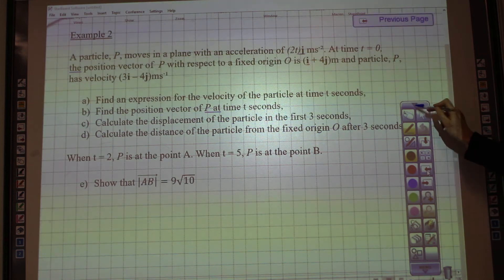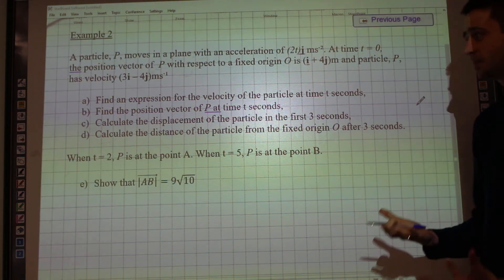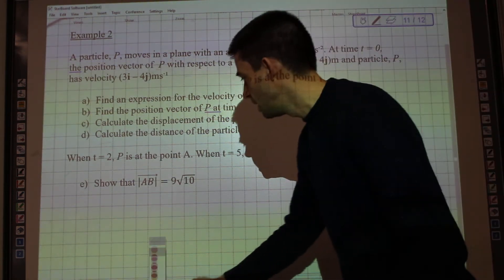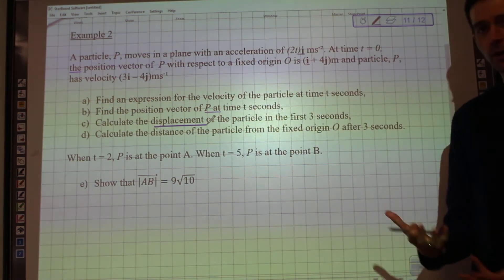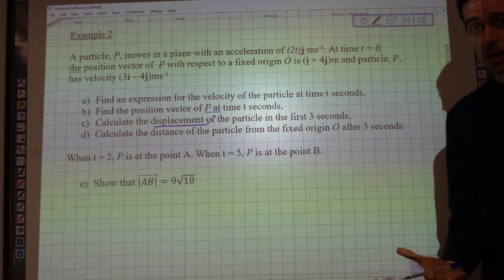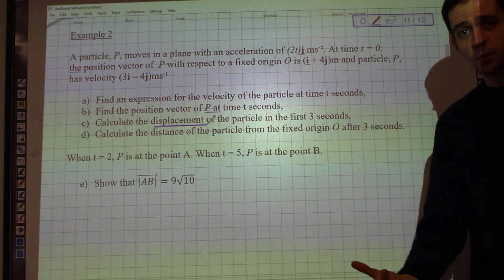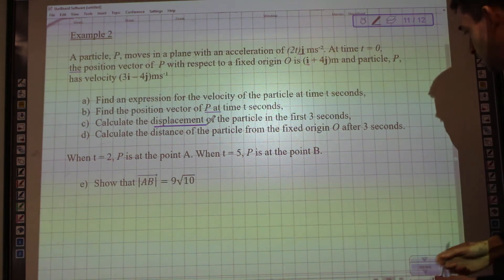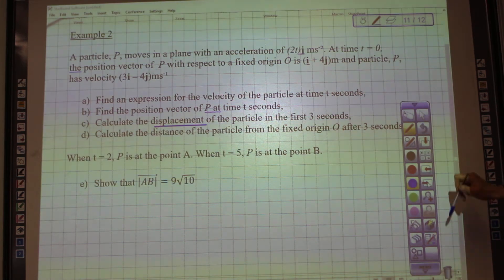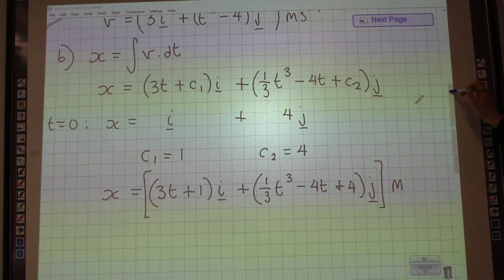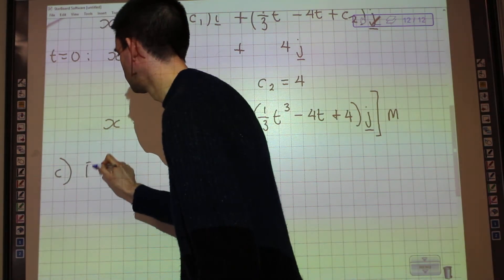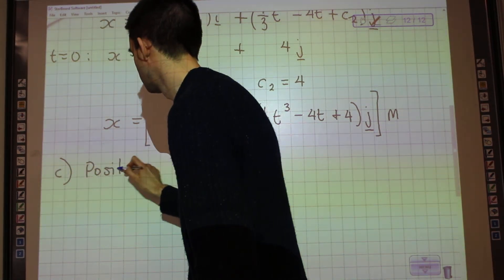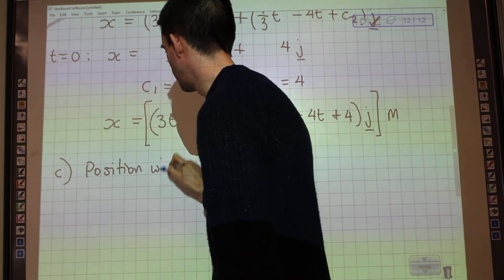Right. Part c is asking me to calculate the displacement of the particle. Now, displacement is how far it's moved in relation to where we started. And there's two approaches we can take to this. I'm going to take you through both of them. So, the first one is we need to find the position when t equals 3.